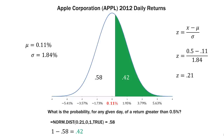So the probability for any given day of a return greater than 0.5% is 0.42, or 42%.